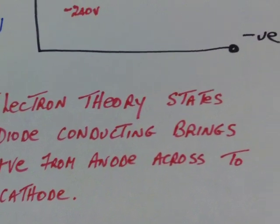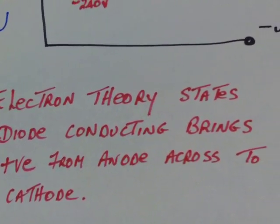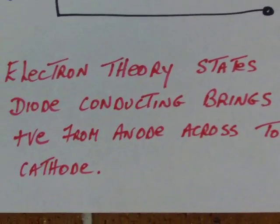Electron theory states that a diode when it is conducting brings the positive from the anode across the PN junction to the cathode.